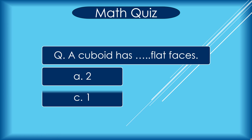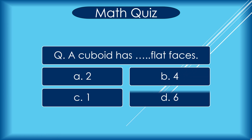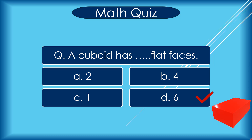A cuboid has how many flat faces? A 2, B 4, C 1, D 6. Correct answer is D 6.